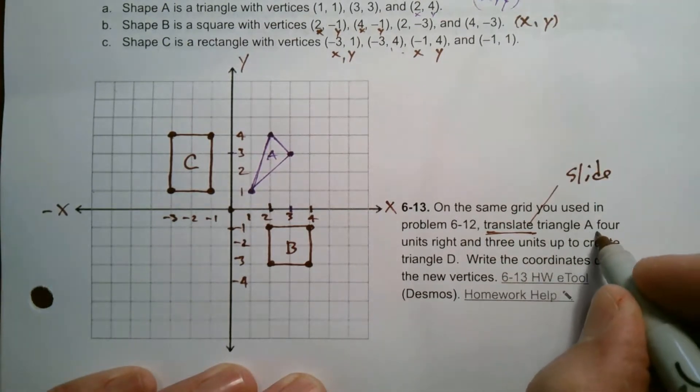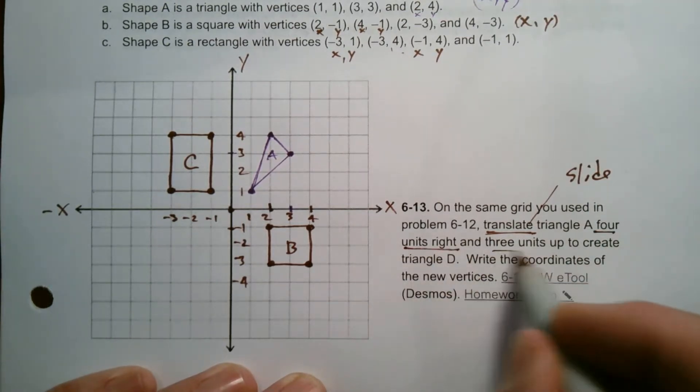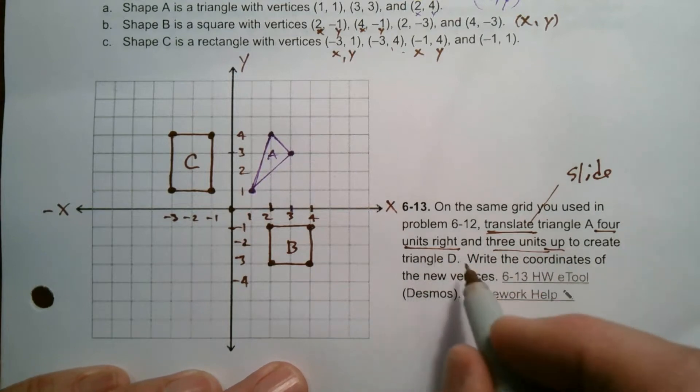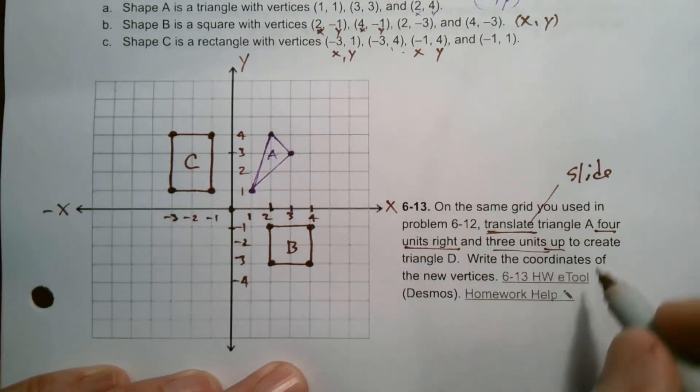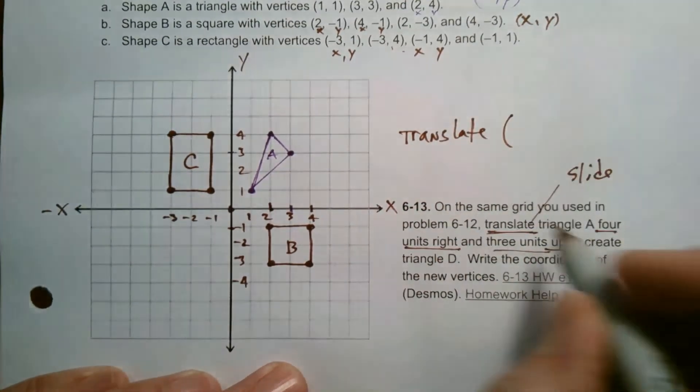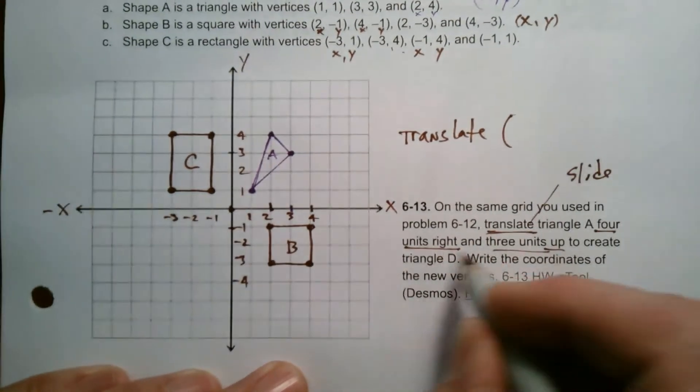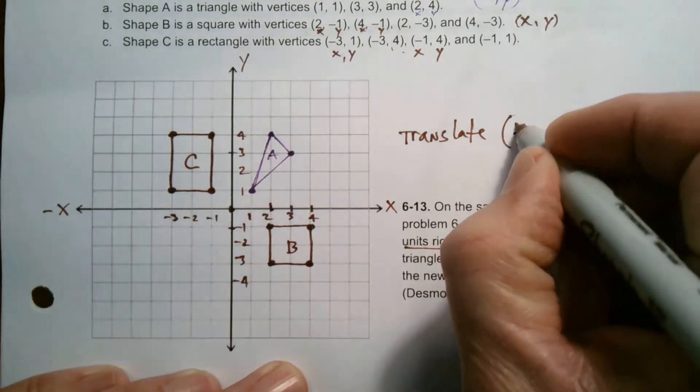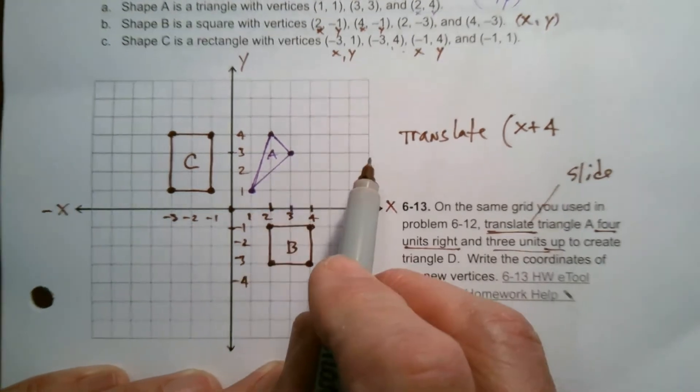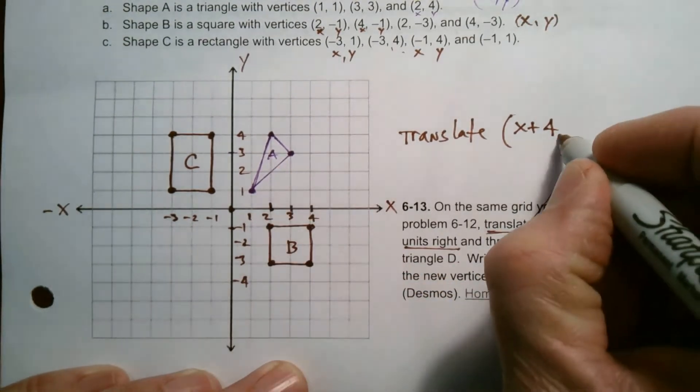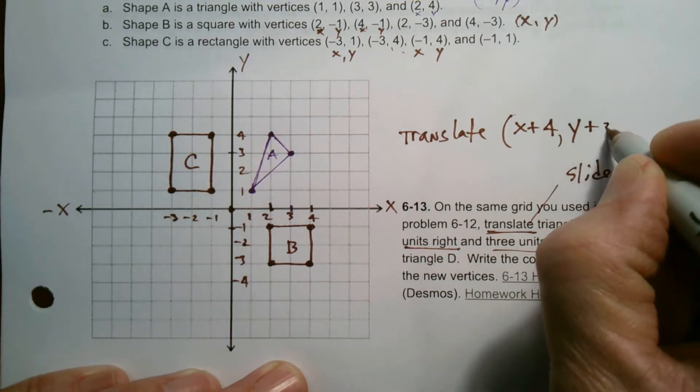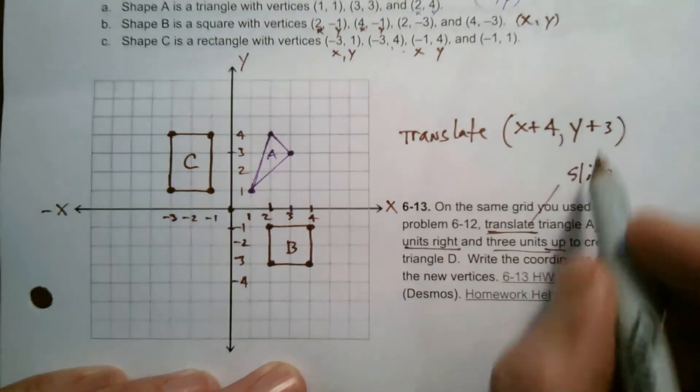And I'm going to slide the triangle four units to the right and three units up. So four units to the right and three units up. And I'm going to show you the technical algebra here that we would use. The notation would be x plus four, because you're taking each of the x's and you're going four to the right. You're going four positive to the right is positive, that direction, positive. And then for the y, you're going up. So that also is positive. So the y, you're going at y plus three. So this is the move we're making.